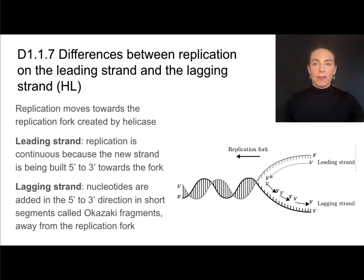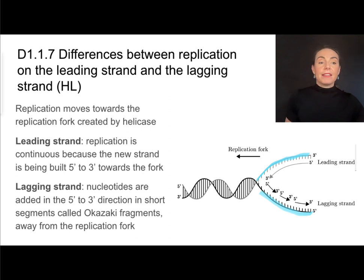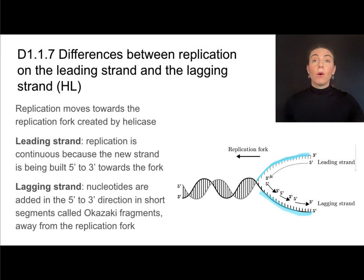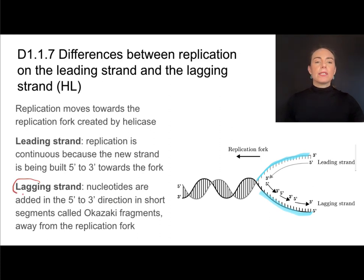On the other strand, we have a problem. This parent strand runs 3-prime to 5-prime, so the new strand must run 5-prime to 3-prime — the new strand and parent strand must be anti-parallel. The problem is that new nucleotides can only be added to the 3-prime end, so we cannot add them continuously toward the replication fork. Instead, we have to add them in short segments called Okazaki fragments, away from the replication fork. We call the strand being made this way the lagging strand.